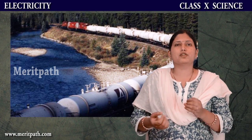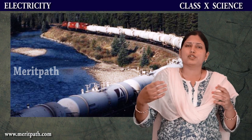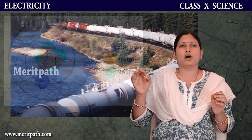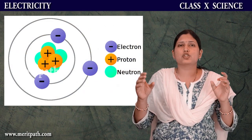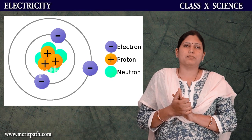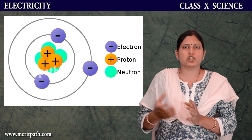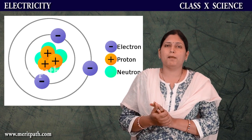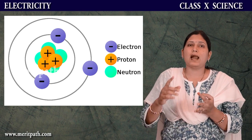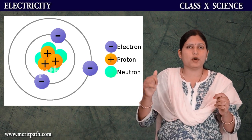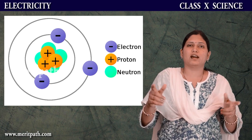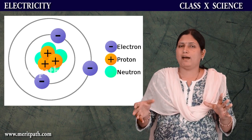Such is the importance of electricity in day-to-day lives. Whenever we think of electricity, we think of switching on and off and using sockets. All this electricity has something called charge. This charge is made up of protons, electrons, and neutrons. Protons are positively charged particles, electrons are negatively charged particles, and neutrons do not have any charge.